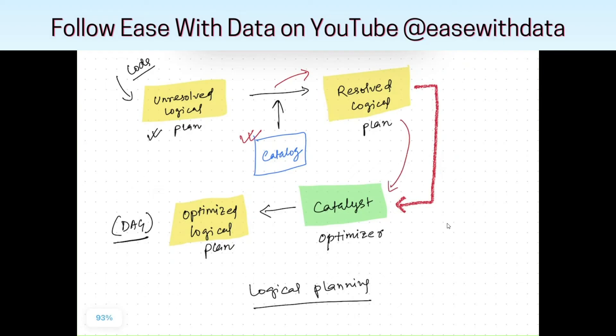This resolved logical plan is taken into the catalyst optimizer which basically does the whole optimization for the logical planning. Once catalyst optimizer completes its optimization, it generates an optimized logical plan which is the logical tag.